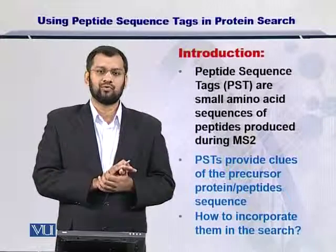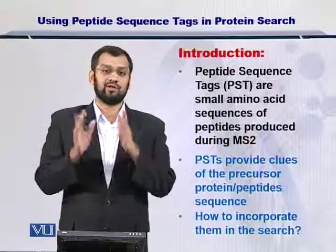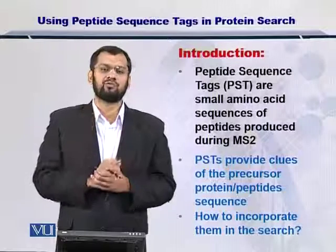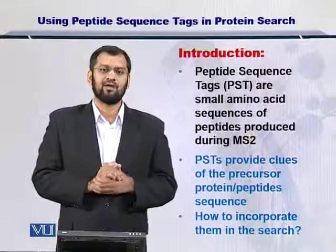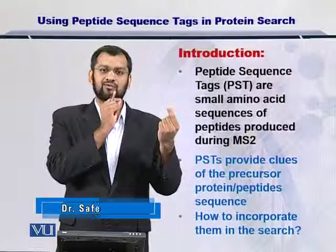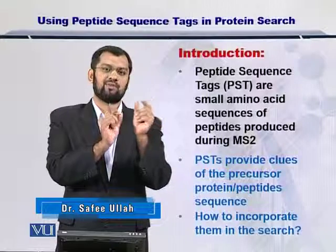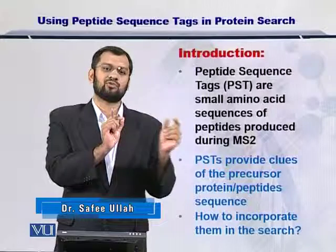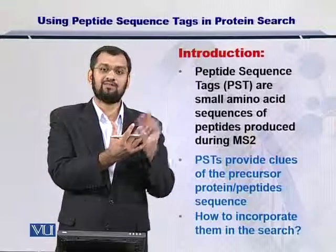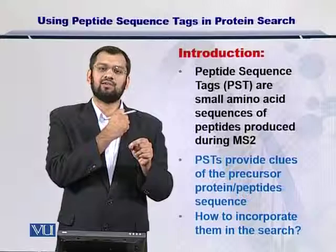You can do this process for multiple proteins. In your protein sequence database, you will have hundreds of thousands of proteins. You take a peptide sequence tag, take one protein from the database at a time, and scan this peptide sequence tag within the sequence of that protein. If the protein contains that peptide sequence tag, it becomes your candidate protein.